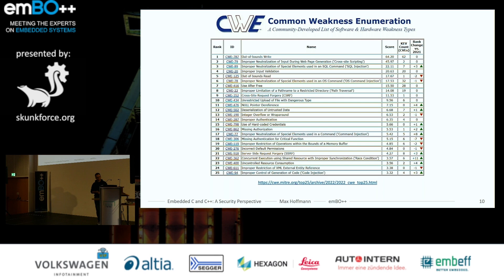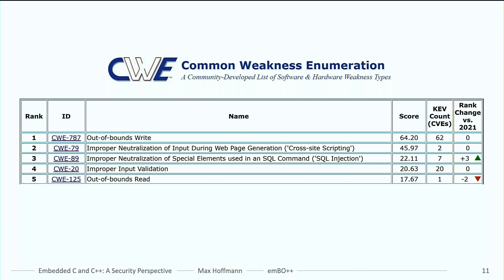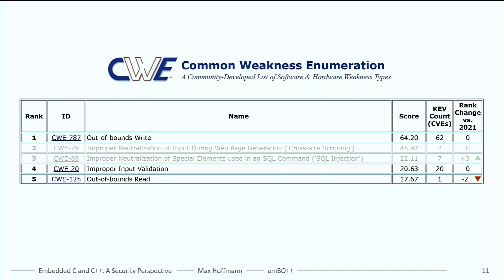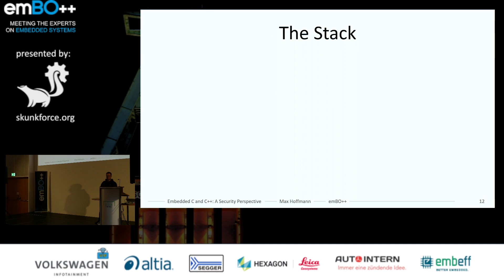There is the Common Weakness Enumeration register, which classifies all published security issues into the most recurring categories. Let's focus on the top five. The number one issue still in the wild is out-of-bounds write. Numbers two and three may not be embedded-focused, but three out of the top five issues occur regularly in embedded applications. One reason for this is simply the way we write and interact with code.